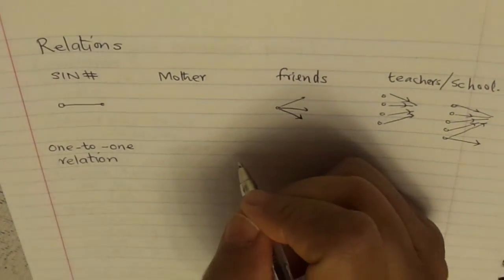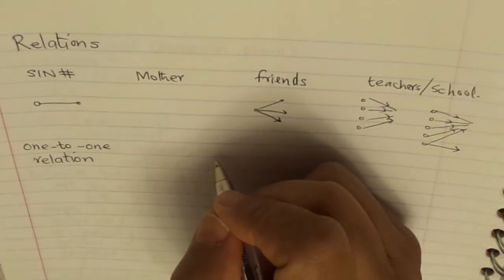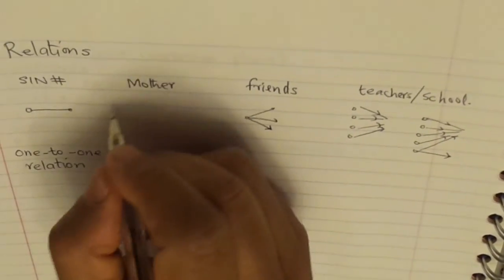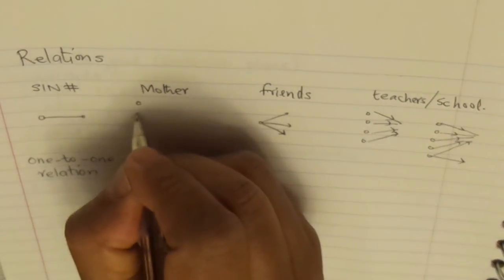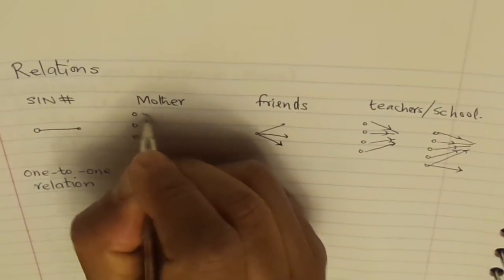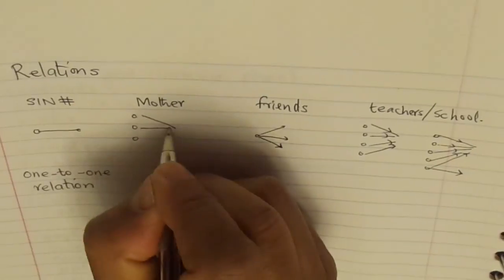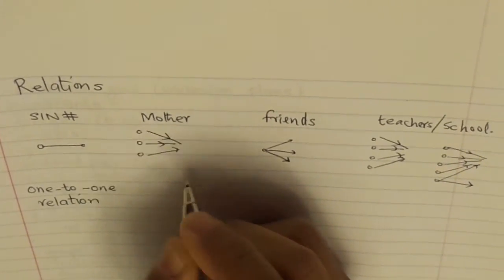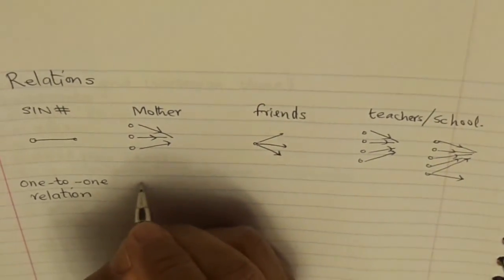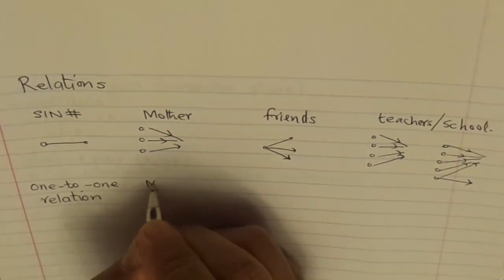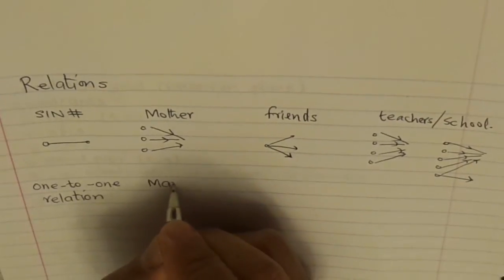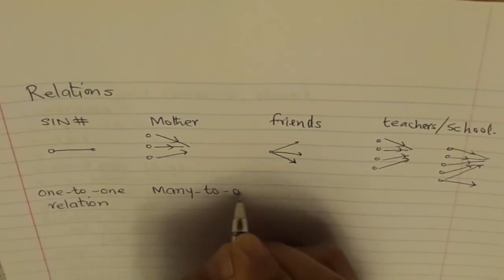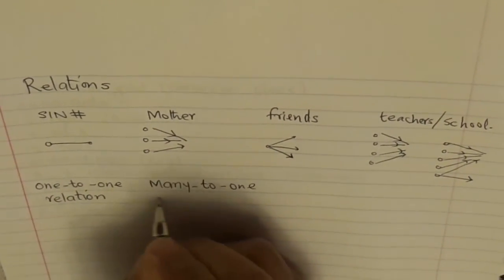Mother — a mother could have many children. Therefore, all the brothers and sisters are linked with the mother. This is a many-to-one relation.